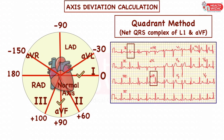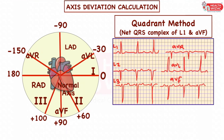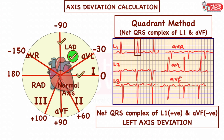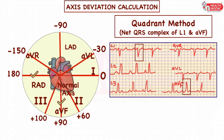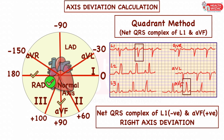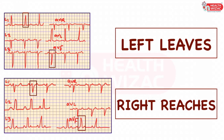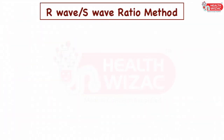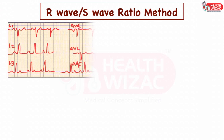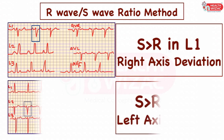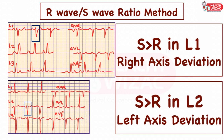If net QRS complex in lead 1 and AVF are positive, then ECG falls under the normal axis quadrant. If net QRS complex is positive in lead 1 and negative in AVF, then ECG falls under the left axis deviation quadrant. If net QRS complex is negative in lead 1 and positive in AVF, then ECG falls under the right axis deviation quadrant. This can be remembered by the mnemonic 'left leaves and right reaches.' Another method is by calculating the R wave to S wave ratio: if S wave is more than R wave in lead 1, it is right axis deviation; if S wave is more than R wave in lead 2, it is left axis deviation.